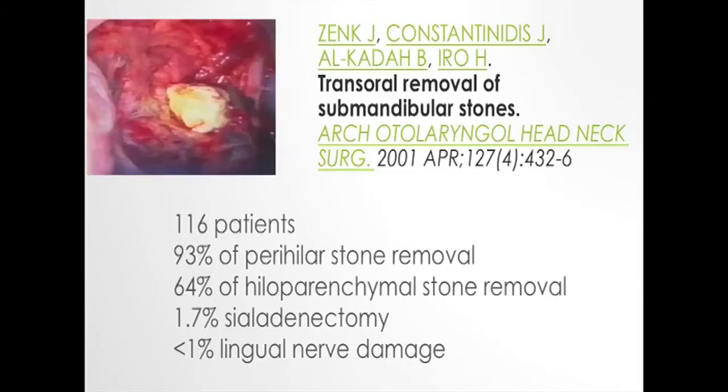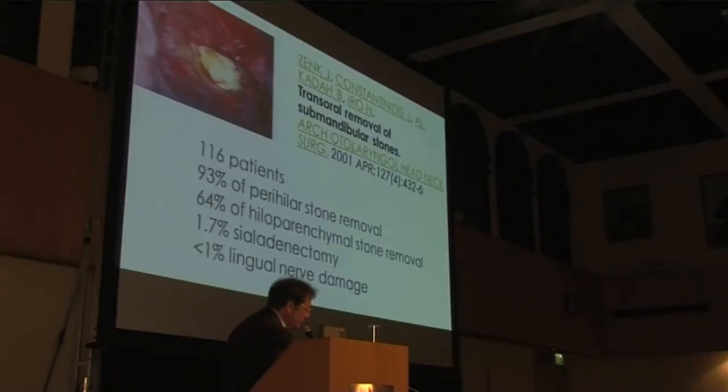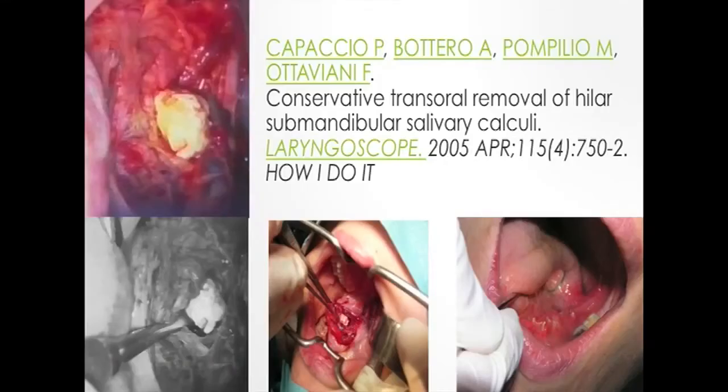This is the first important series of patients described by Professor Zhang from the Erlangen group: 116 patients with 93% of perihilar stones removed and 64 stones removed in the hiloparenchymal region, with no more than 1% of lingual nerve damage.